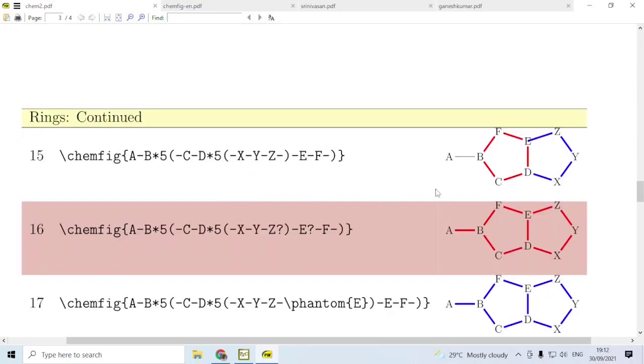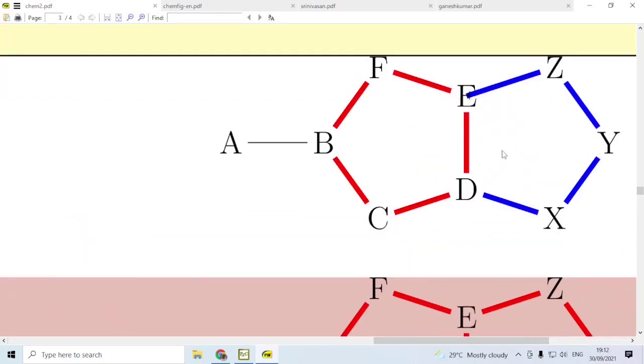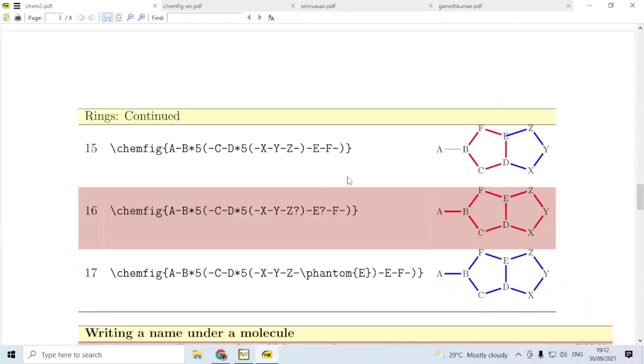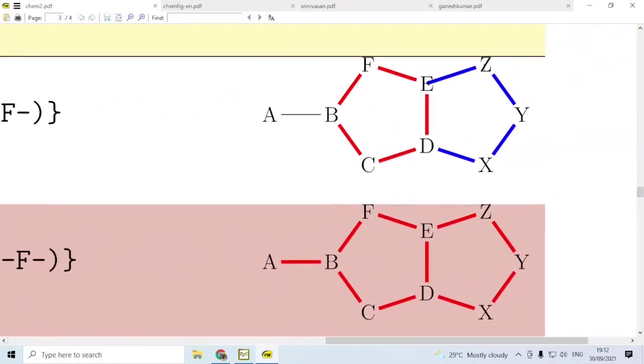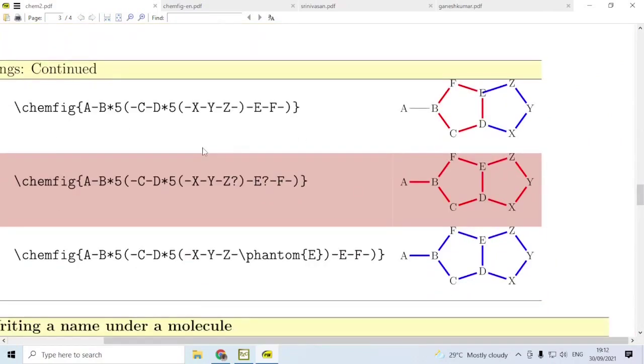Now, if we continue this, let us consider a single bond B to which is attached a five-sided ring, and again we have another ring attached to the first ring. If you give the code as given here, then there is a problem, namely the bond starting from Z protrudes into the atom E. This can be avoided by two different methods.